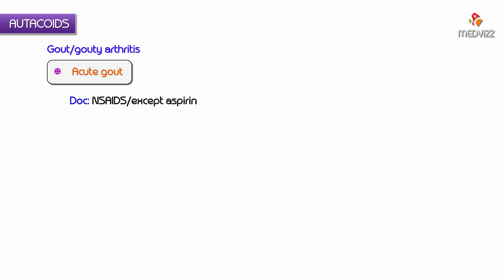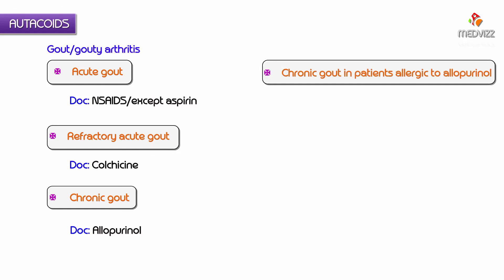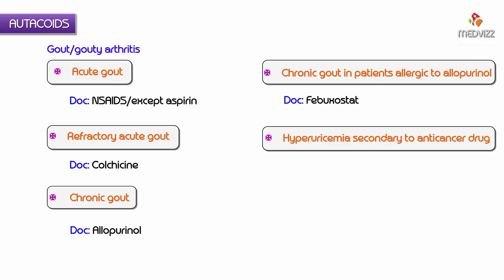For gout: the drug of choice for acute gout is NSAIDs except aspirin — aspirin is not given for gout. For refractory acute gout, the drug of choice is colchicine. For chronic gout, the drug of choice is allopurinol. For chronic gout in patients allergic to allopurinol, the drug of choice is febuxostat. For hyperuricemia secondary to anti-cancer drugs, the drug of choice is allopurinol.